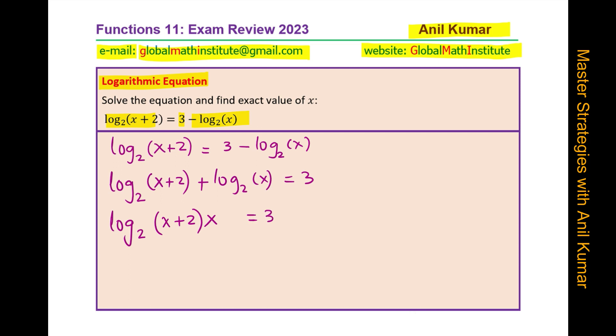And next we will write this in exponential form. That means x plus 2 times x equals 2 to the power 3 which is 8.